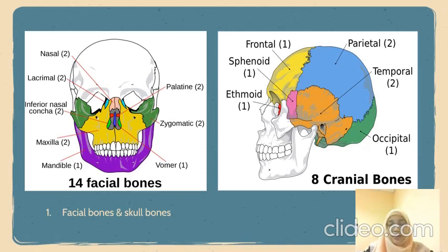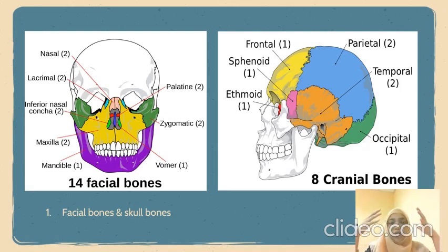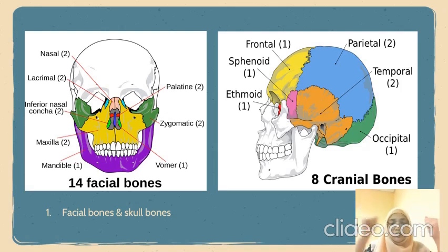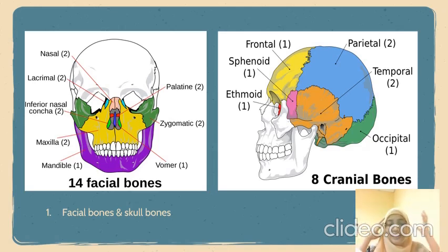For the frontal, parietal, and occipital bones, they are flat bones. The frontal bone is a flat bone that makes up your forehead and also forms the upper portion of your eye socket. The parietal bone is a pair of flat bones located on either side of your head, behind the frontal bone.